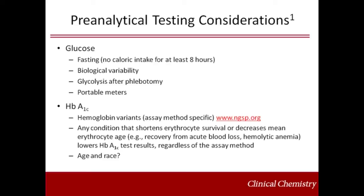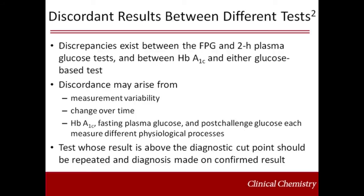Hemoglobin A1C results are not affected significantly by acute fluctuations in blood glucose concentrations, such as those occurring with illness or after meals. However, age and race reportedly influence hemoglobin A1C, and these effects on hemoglobin A1C values remain to be determined. Just as there is less than 100% concordance between the fasting plasma glucose and two-hour plasma glucose tests, there is not full concordance between hemoglobin A1C and either glucose-based test. Further research is needed to better characterize those patients whose glycemic status might be characterized differently by two different tests obtained close together in time.